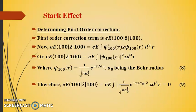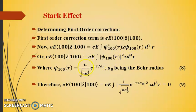The first-order correction term is linear in the electric field, H' = eEz. In integral form, this is: eE ∫ ψ*₁₀₀(r) · z · ψ₁₀₀(r) d³r = eE ∫ |ψ₁₀₀(r)|² z d³r, where ψ₁₀₀(r) = (1/√(πa₀³)) · exp(−r/a₀), with a₀ being the Bohr radius.